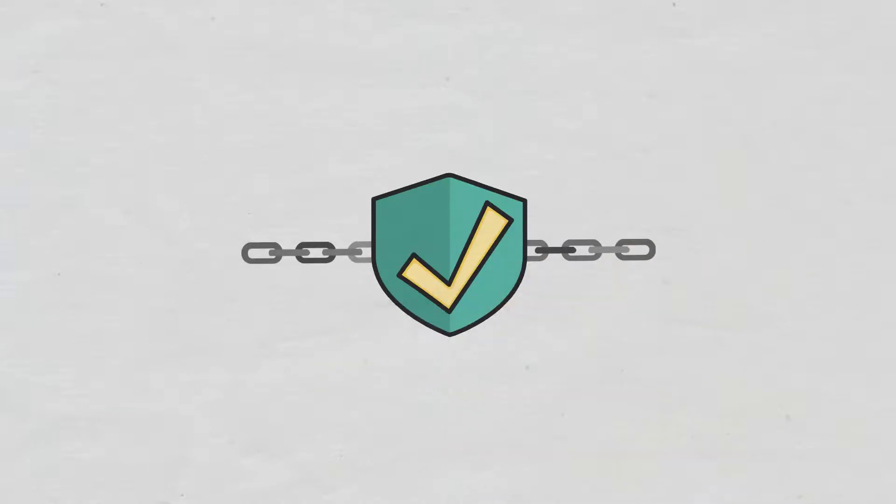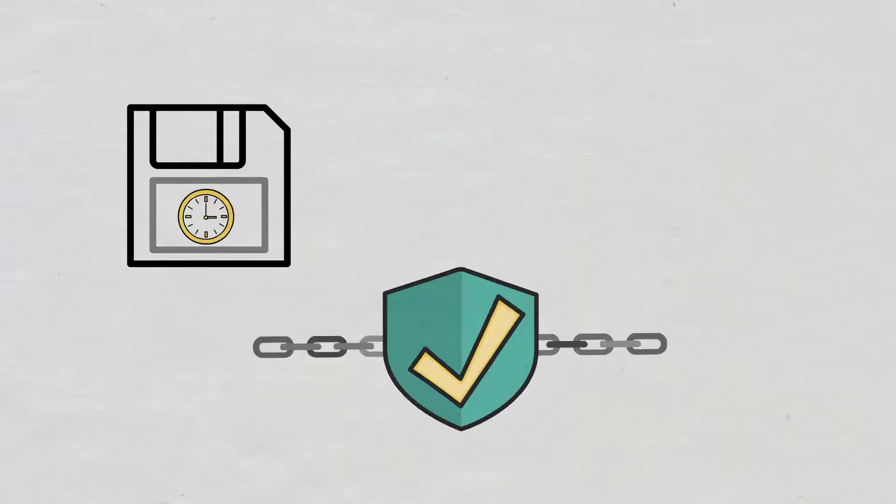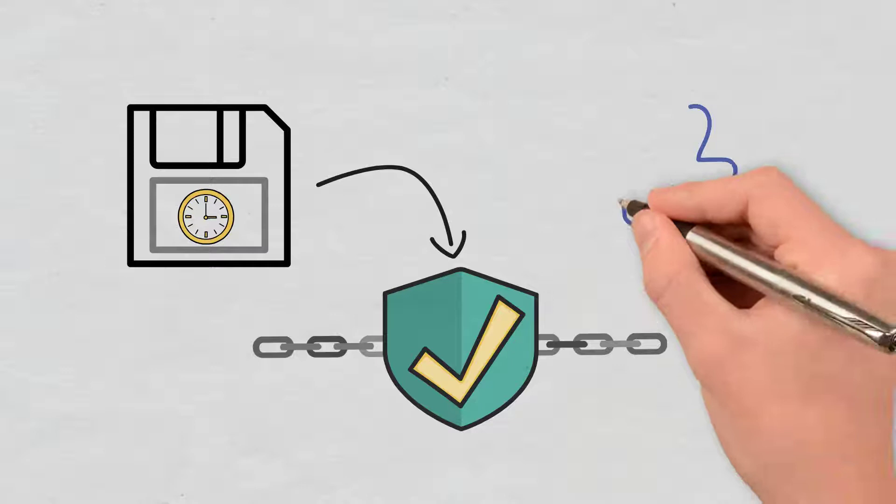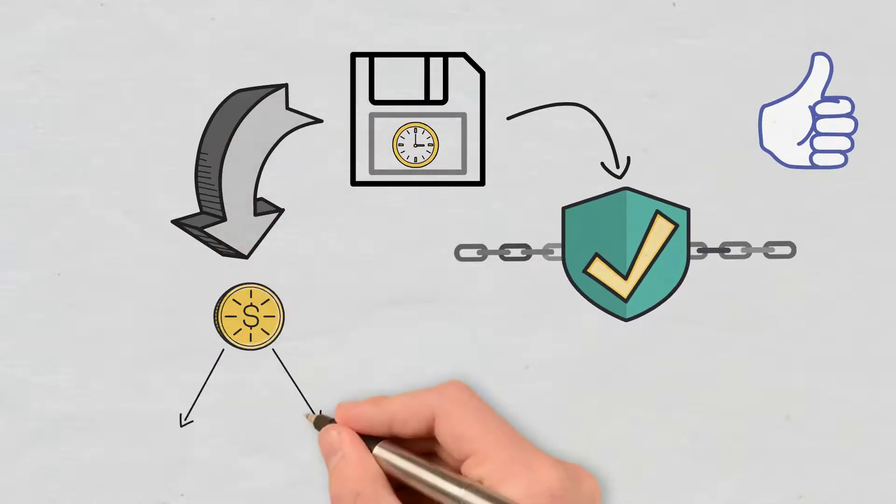Given that the blockchain cannot be tampered with, blockchain-based timestamps ensure the authenticity of each piece of data and prevent bad behaviors. Cryptographically encrypted timestamps also solve the issue of double spending and give every transaction data on the blockchain a mark.